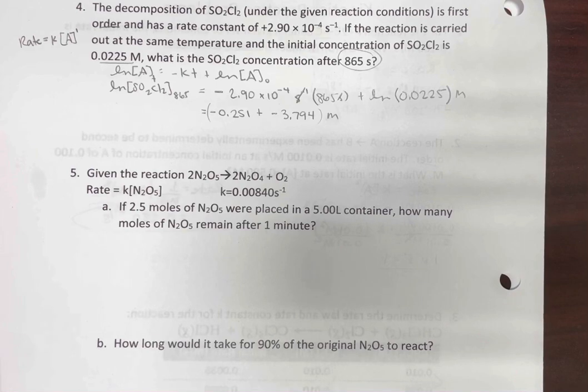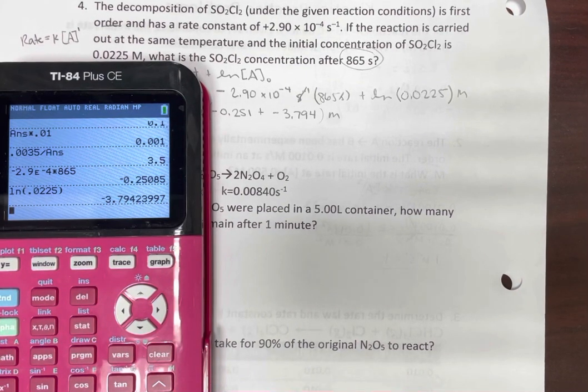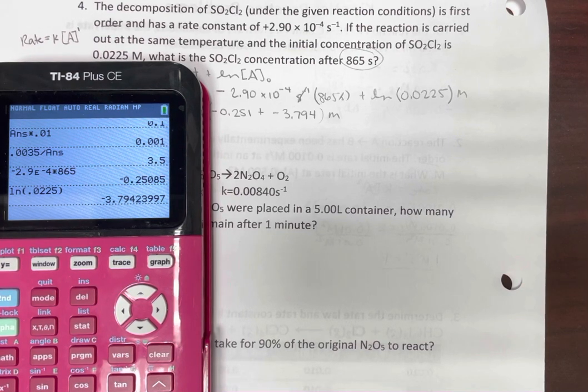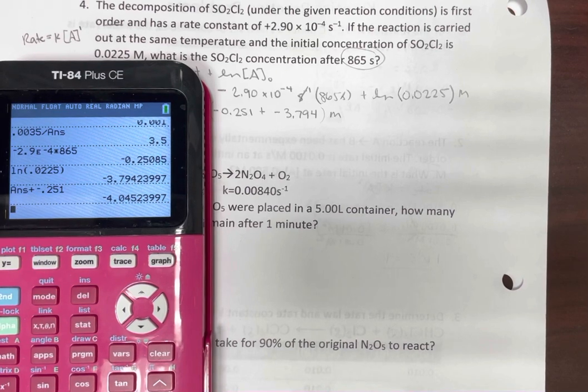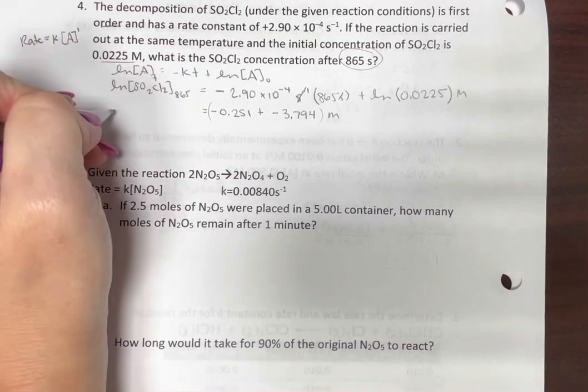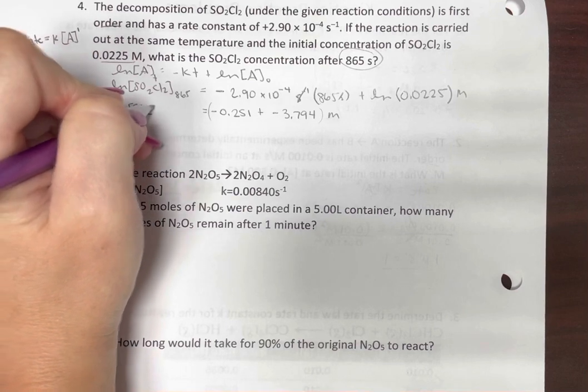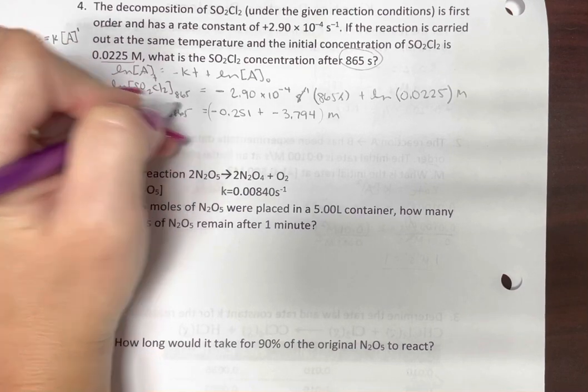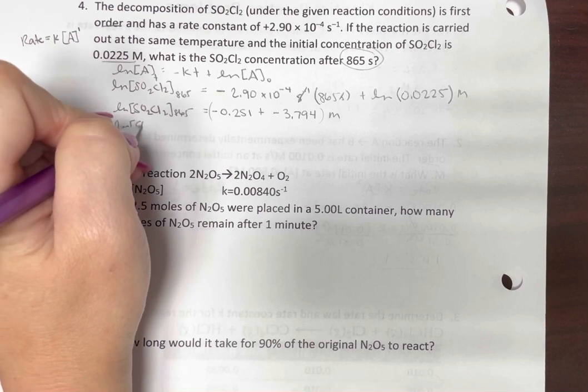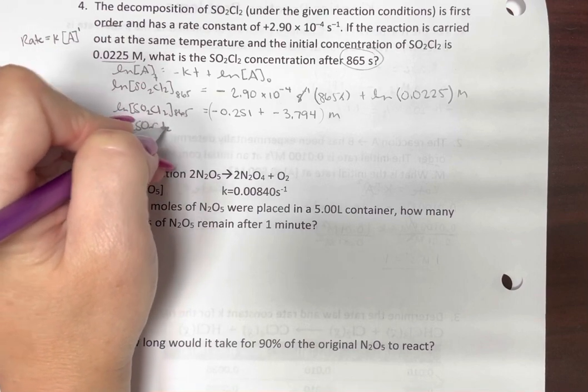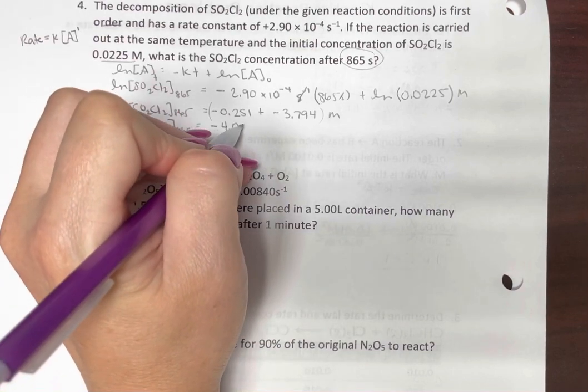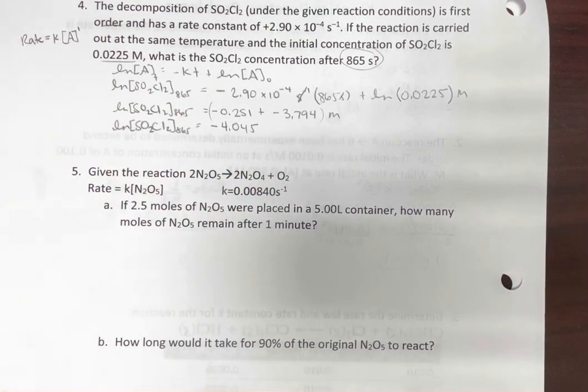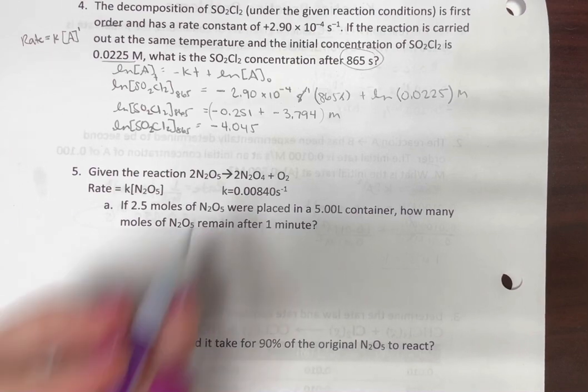All right. So now let's add these together. So plus negative 0.251. So that gives me, here let me just copy this back. I'm bad about that. So natural log concentration SO2Cl2 at 865 seconds equals negative 4.045. Okay. And molar.